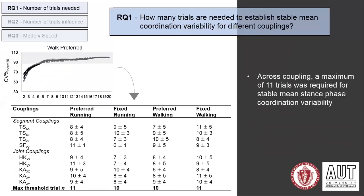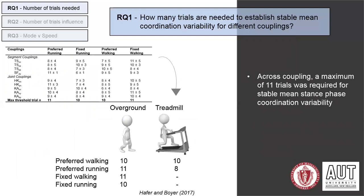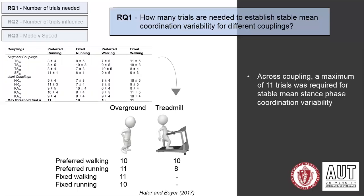That formed the basis of our answer to the first research question in terms of providing a guideline for future overground locomotion coordination variability research. How this compares with treadmill research when performed during preferred walking and running is detailed on the slide. The differences likely exist due to the moderation of coordination variability in the treadmill environment, whereby systematic regulation of dynamic neuromuscular control is required, unlike during overground running.